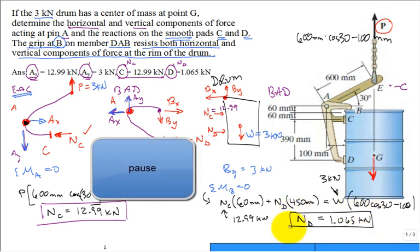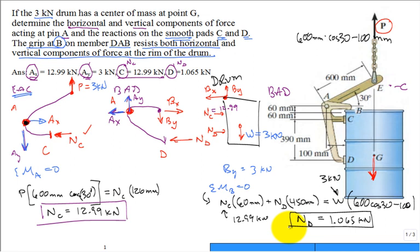We started with the drum, then we went to the member EAC, then we went back to the drum. So, now we can go to member EAC or member BAD, and we can solve for Ax or Ay. Somebody probably is chomping at the bit wanting to solve for Ay over here using member EAC. How would you solve for Ay using member EAC? Sum of the forces in the Y. And what do we conclude? That on member EAC that 3 is up with the P. P is 3 kilonewton load up. So, Ay is 3 kilonewton downward.